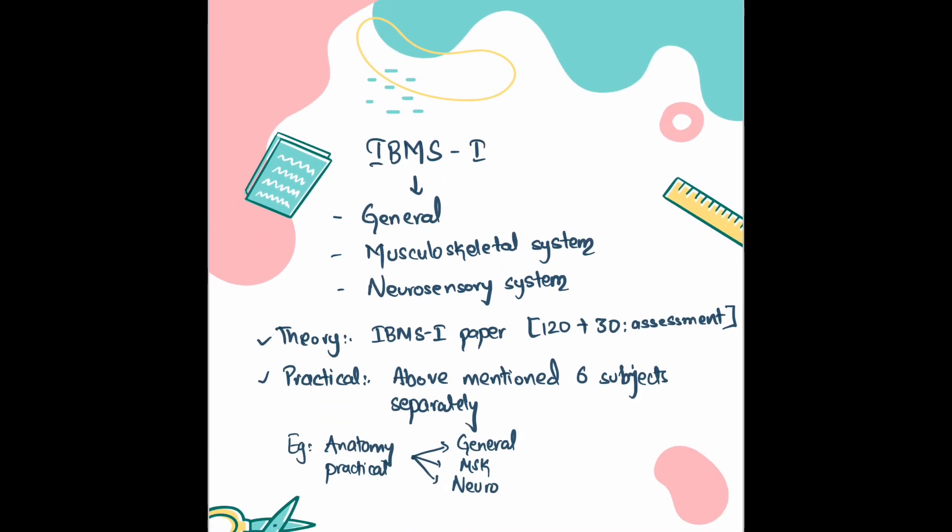IBMS 1 is in the first year and covers general, musculoskeletal system, and neurosensory system. The written paper is 120 marks, with an internal assessment of 30 marks, giving a total score of 150. Additionally, you will have six subjects with separate practicals — for example, anatomy practical covering general, musculoskeletal, and neurosensory. You will give one paper comprising all the systems for each subject.